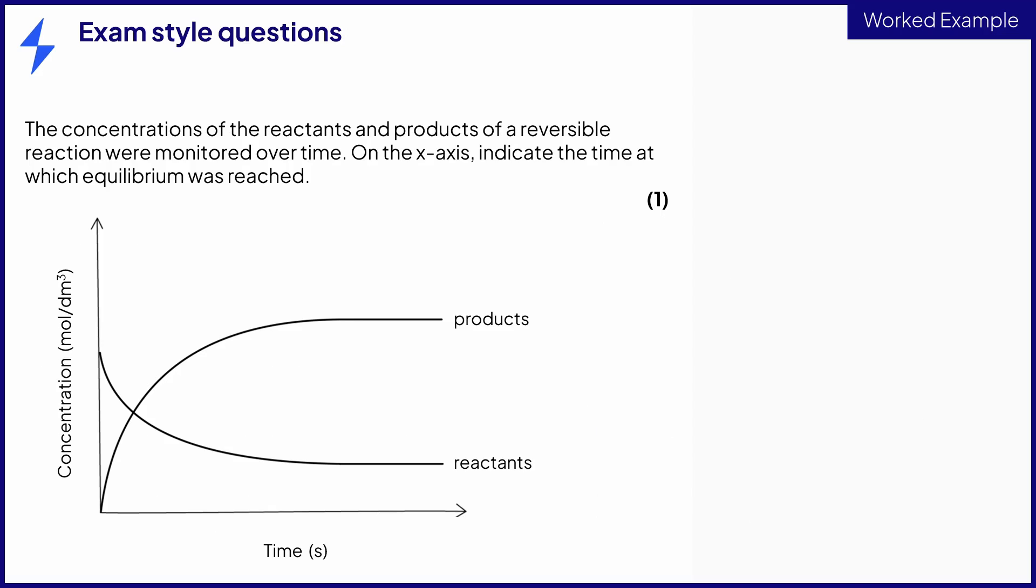This question asks you to show on the graph the time at which equilibrium of a reversible reaction was reached. This is testing both your knowledge of what equilibrium is and your ability to analyze a graph. Look at the axes of the graph to help you understand what it is showing you.